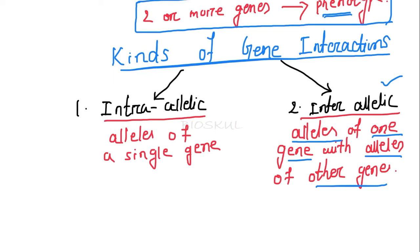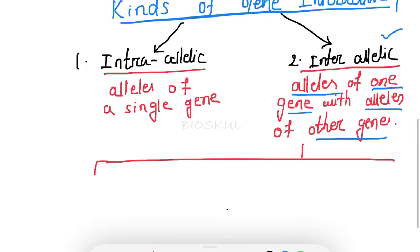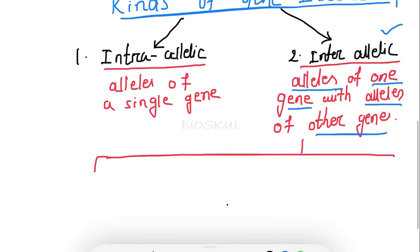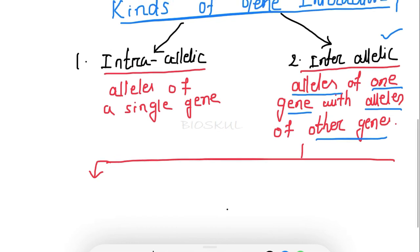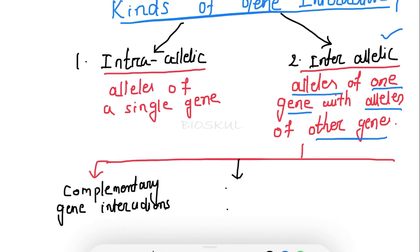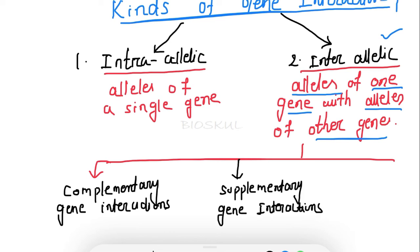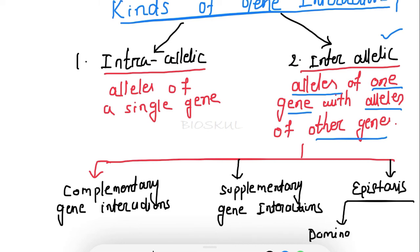The types of inter-allelic gene interaction that we are going to discuss in upcoming sessions include: complementary gene interaction, supplementary gene interaction, and epistasis — which is very important. Epistasis may be dominant epistasis or recessive epistasis.